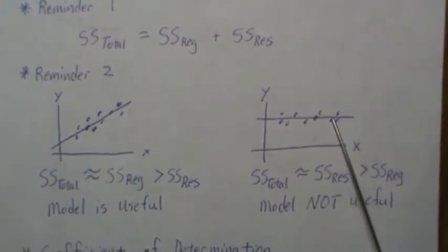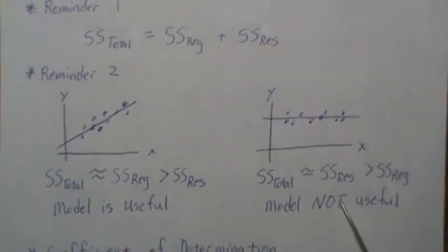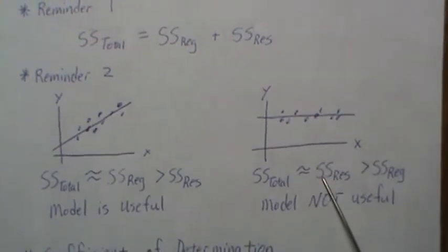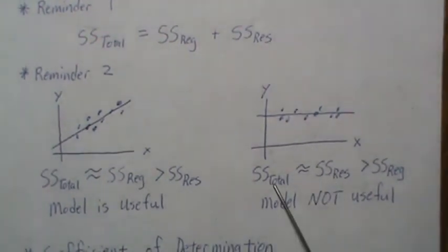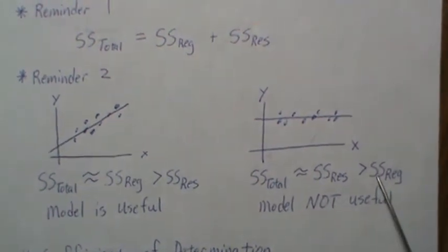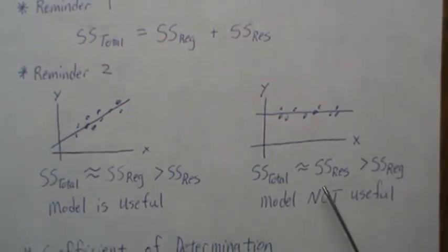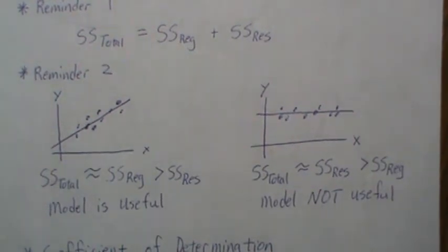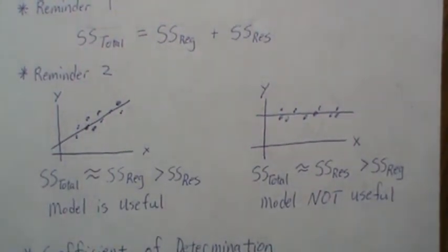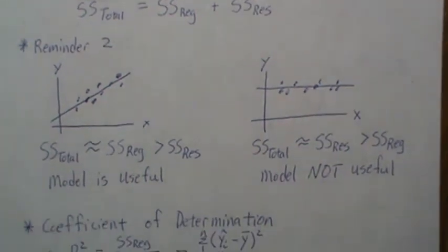When the slope is around zero, meaning the model is not useful, the residual sum of squares is very close to the total sum of squares and the regression sum of squares is much smaller. So it makes sense to develop a number that tells us how useful the model is — and that's what the coefficient of determination is.